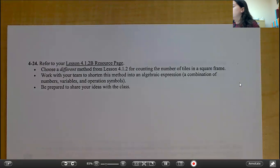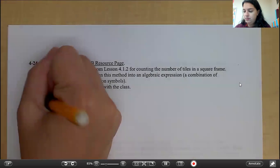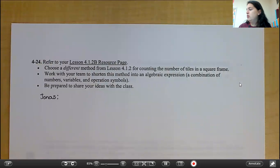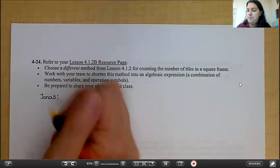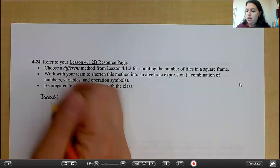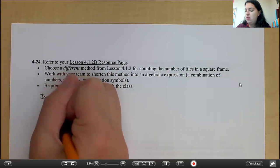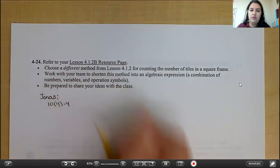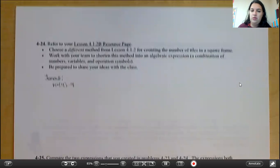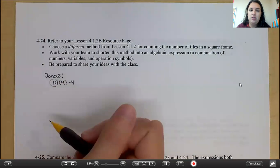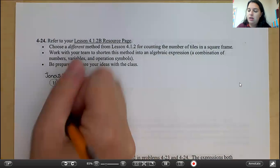So for example, let's talk about Jonas. Jonas said if each side was 10, there were four sides he needed to subtract four. So now what we want to do is we want to write this as an algebraic expression. So if we do not know the side lengths, we are going to replace 10 with x.